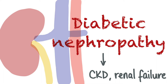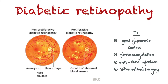Nephropathy is managed by reducing the blood pressure to prevent further damage with an ACE inhibitor or angiotensin II receptor antagonist, even if the baseline blood pressure is normal. It's also important to prescribe a statin if the Q-risk is above 10% and ensure tight glycemic control. Diabetic retinopathy is another complication of diabetes that can result in visual impairment and reduced quality of life.